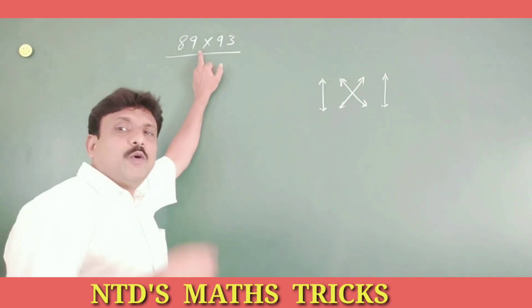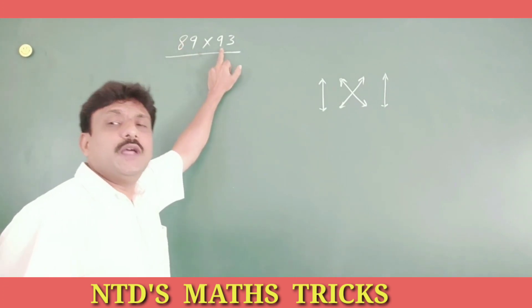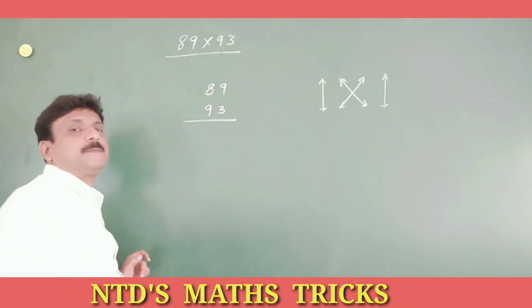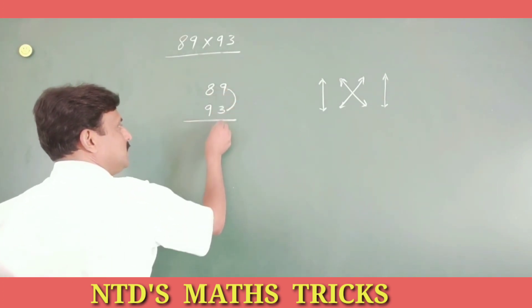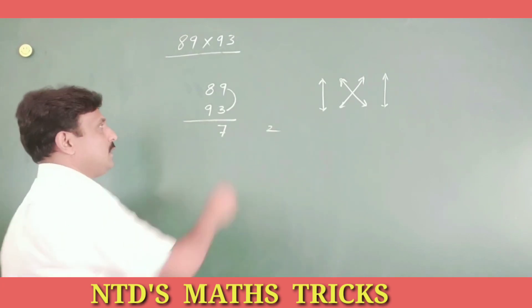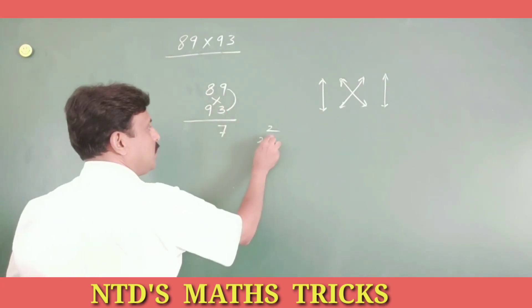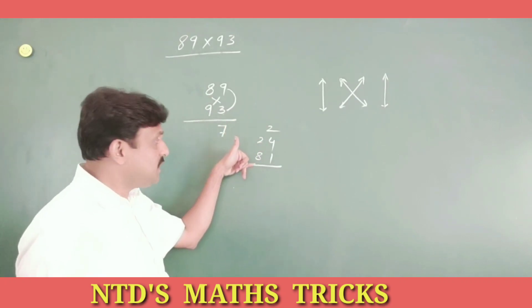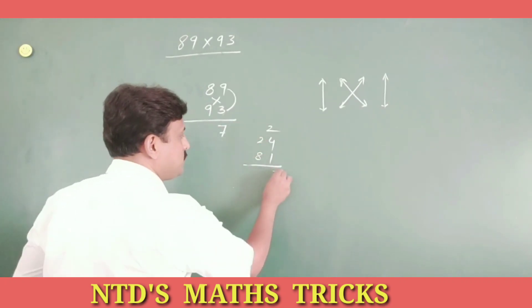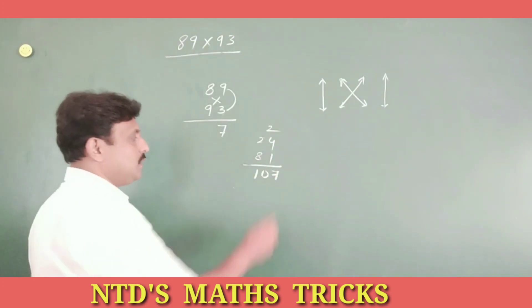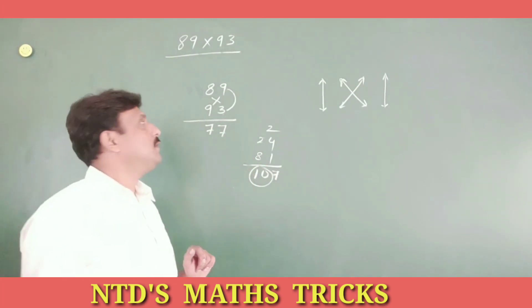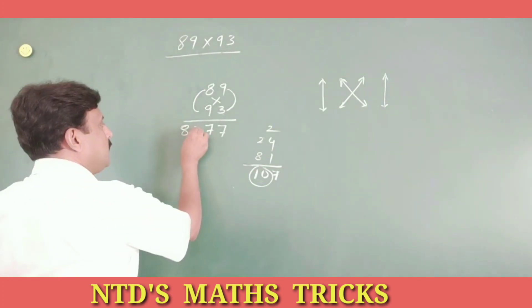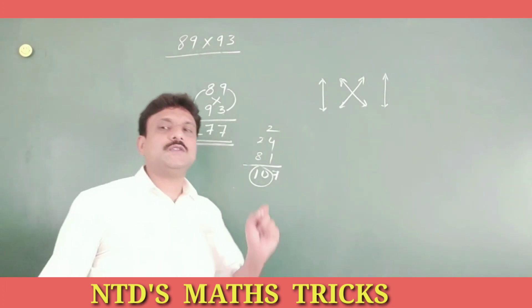One more bigger number, 89 into 93. First multiply unit place, 9, 3s are 27, write 7, 2 carry. Cross multiplication, 8, 3s are 24, 9, 9s are 81. Add these 3. This is carry, cross multiplication. Add these 3. So 4 plus 1, 5, 5 plus 2, 7, 8 plus 2, 10. That is 10, 7. Write 7, 10 carry. Multiply 10 plus number, 8, 9, 72. 72 plus 10, 82. This is the answer, 8277. In this way, you can multiply any 2 digit number, either it is bigger one or smaller one.